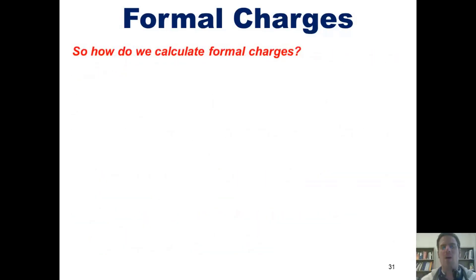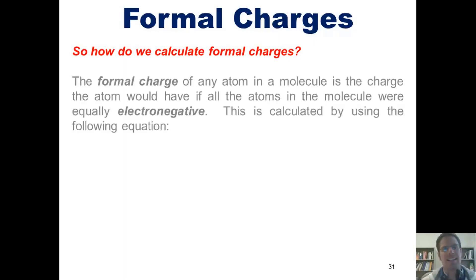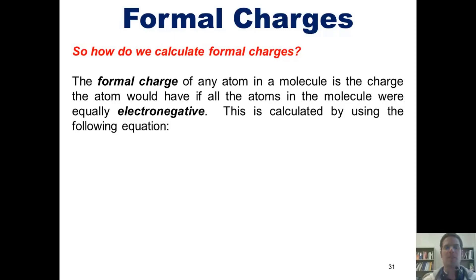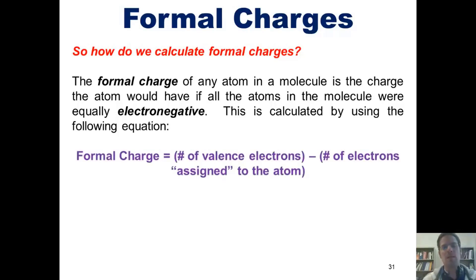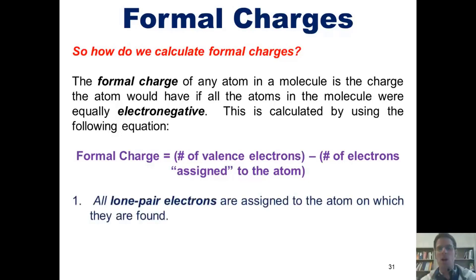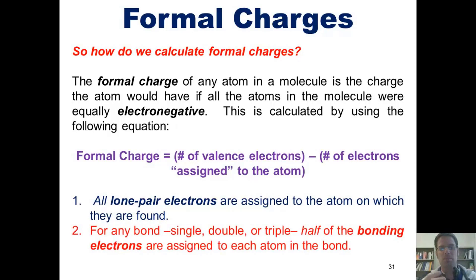So how do we calculate formal charges? The formal charge of any atom in a molecule is the charge the atom would have if all of the atoms in the molecule were equally electronegative. This is calculated using the following equation: formal charge equals the number of valence electrons in that atom minus the number of electrons assigned to the atom. All lone pair electrons are assigned to the atom on which they're found, and for any bond — either single, double, or triple — half of the electrons in that bond are assigned to each atom sharing that bond.